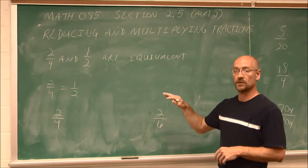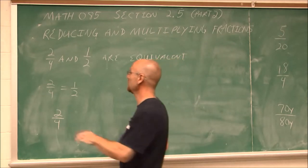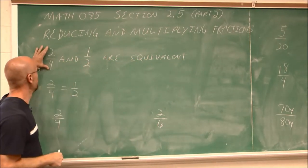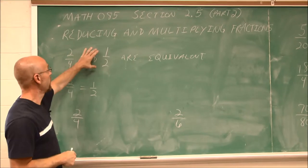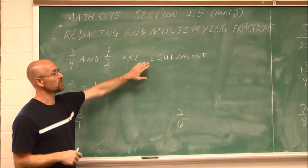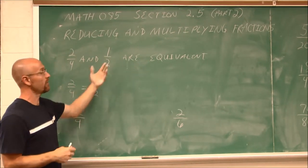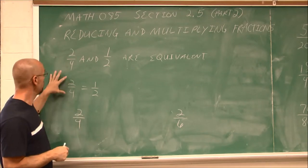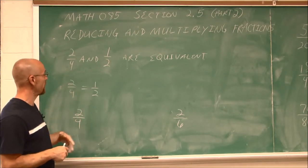Now, in the last section, if we recall, we had a fraction of 2 fourths and 1 half. And we determined that those are equivalent. 2 fourths and 1 half are the same thing. Well, why are 2 fourths and 1 half the same thing?